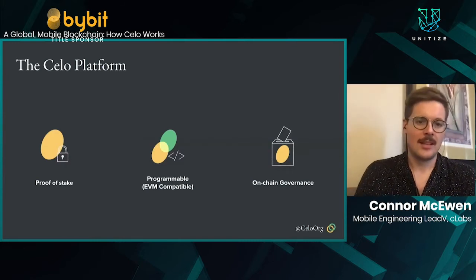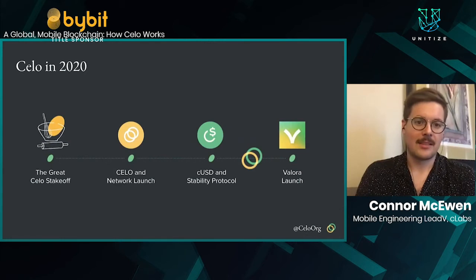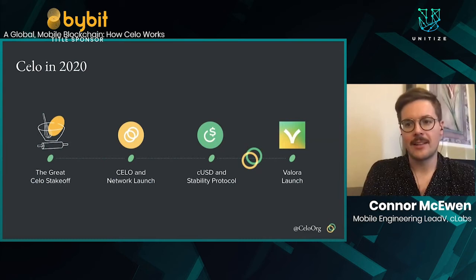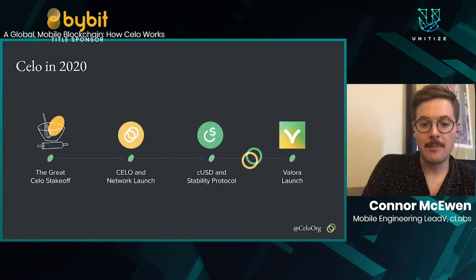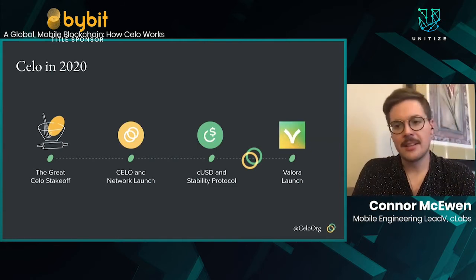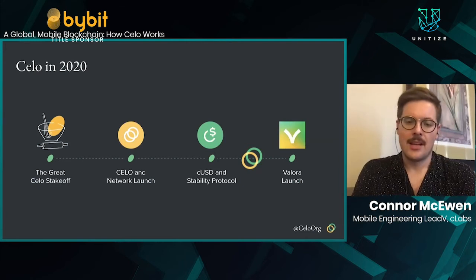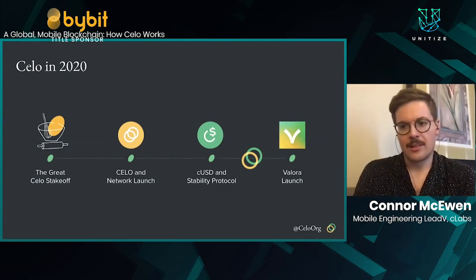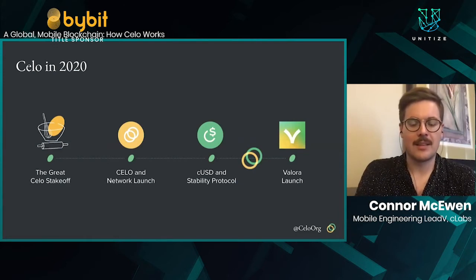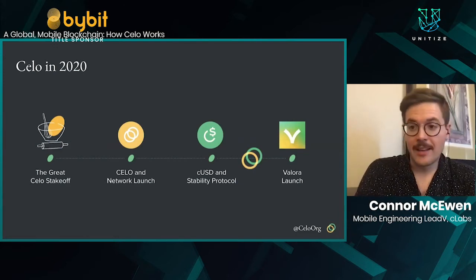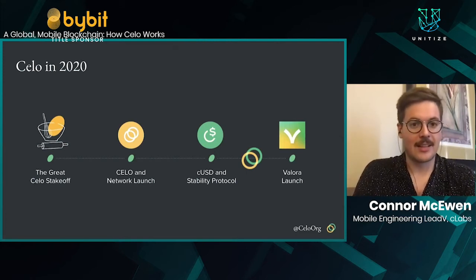What is the Celo platform? First, we're proof-of-stake and we use a validator set — right now there are 100 validators live on the network. It's programmable and EVM-compatible. As I mentioned, we're a fork of Ethereum, so any contract you can deploy to Ethereum you can also deploy to Celo. Another interesting bit about the protocol is that we have full on-chain governance, meaning you can change things like the number of validators and other pieces of the network just through voting on-chain.